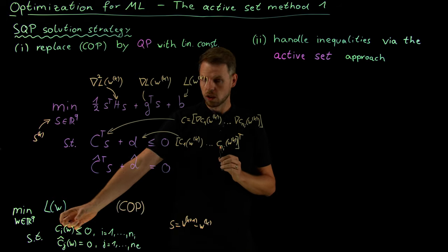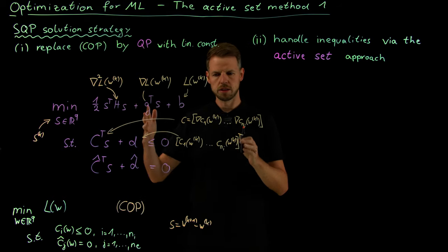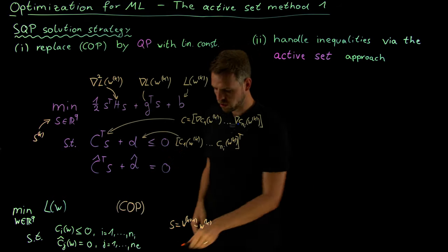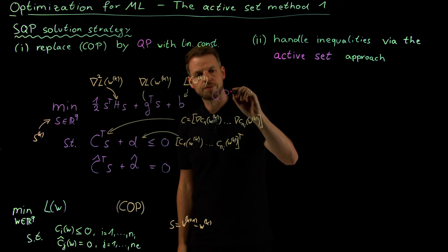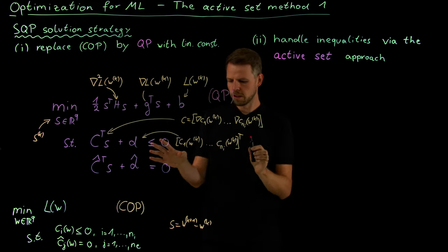So it looks really technical, but it's not that complicated. We have our problem, we assume we can compute first and second derivatives, as well as evaluate the constraint functions and compute their derivatives. This pink problem is really nothing but evaluating all those orange expressions, and then we arrive at our quadratic program, which I'm calling QP. This concludes part one of our strategy.